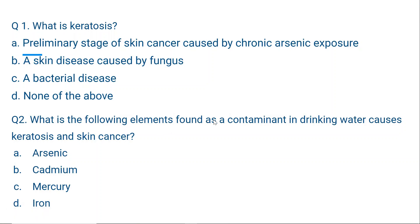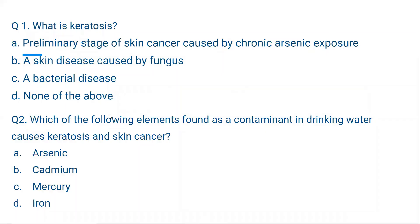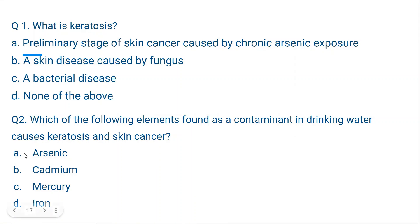Question 2: Which of the following elements found as a contaminant in drinking water causes keratosis and skin cancer? A. Arsenic. B. Cadmium. C. Mercury. D. Iron. The correct answer is A, arsenic. I purposely made these two questions similar but twisted, because in the exam the same topic can be asked in multiple ways. Arsenic causes keratosis, which later becomes skin cancer.